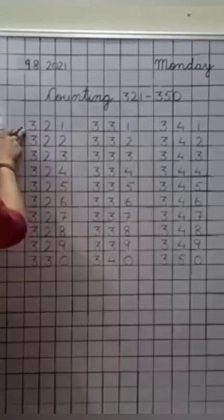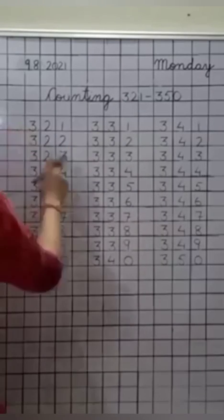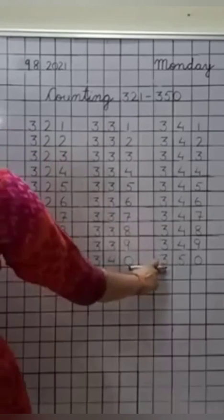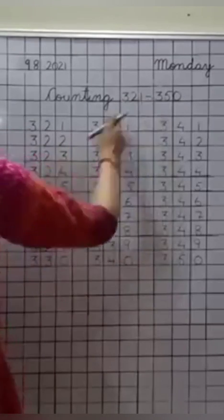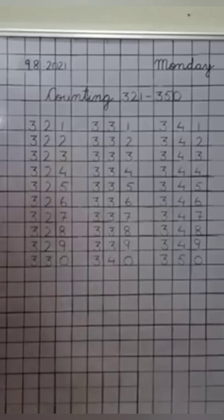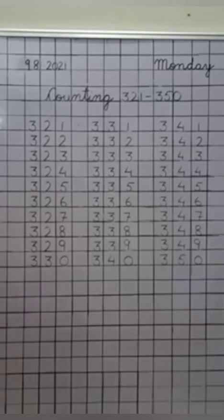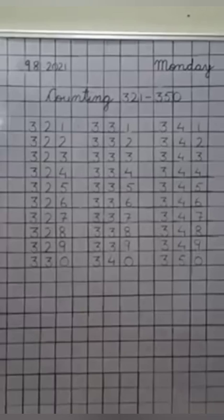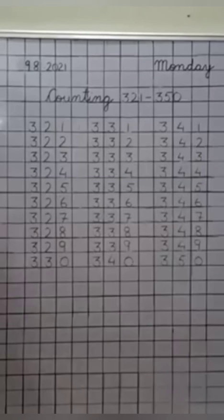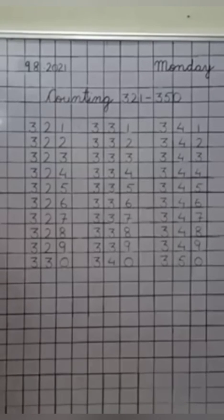See, we started from here: three hundred twenty-one, and we ended here: three hundred fifty. Now let us revise it once more. Now you all will speak after me. Okay.